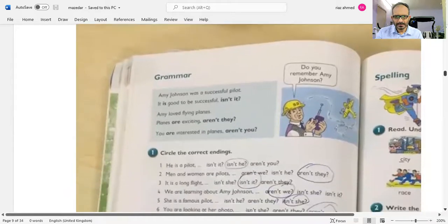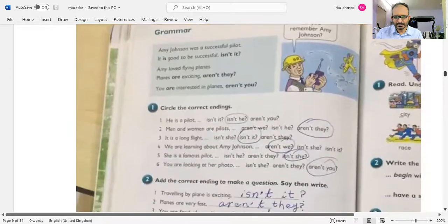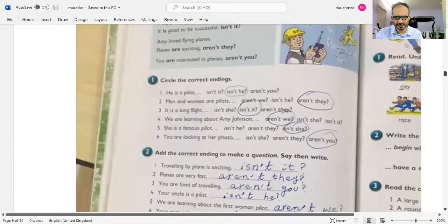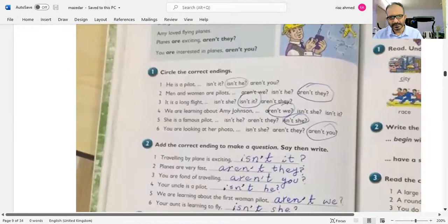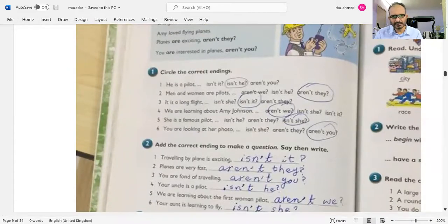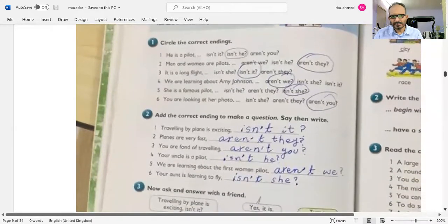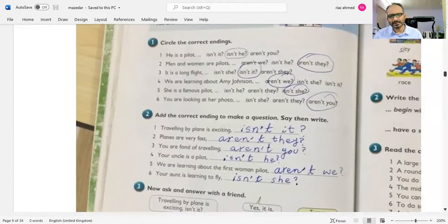He is a pilot. Men and women are pilots, aren't they? It is a long flight, isn't it? We are learning about Amy Johnson, aren't we? She is a famous pilot.